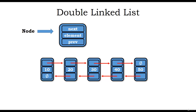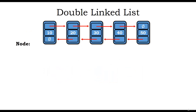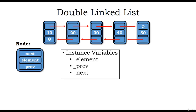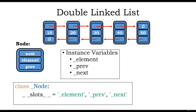This is how a double linked list is created. To create a node for a double linked list, since the node has three members, we have three instance variables: element, previous, and next. The node class for a double linked list will have a slots member containing these three instance variables.